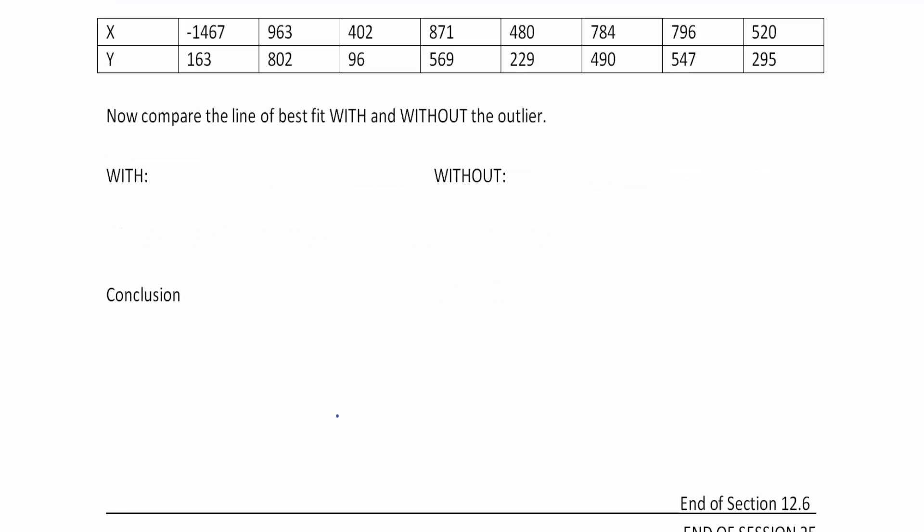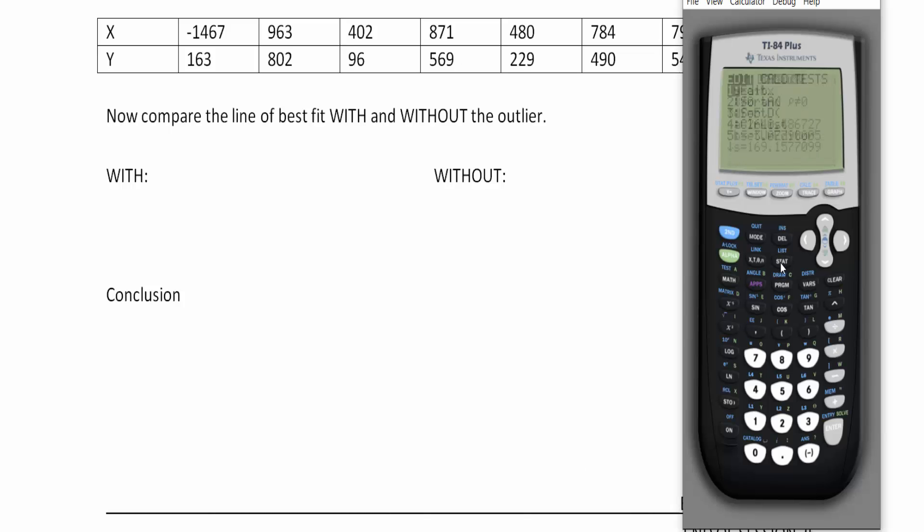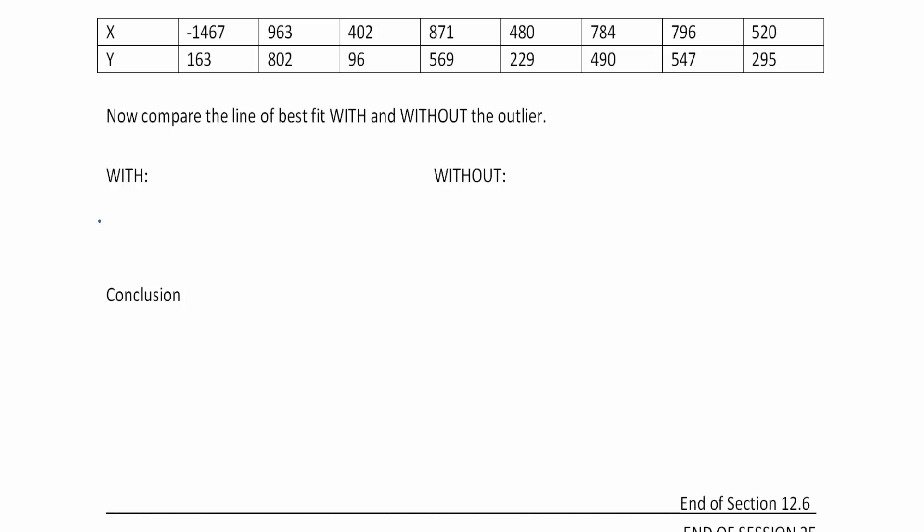This last example here is going to be entering this data. Now I just so happen to have it on my calculator as well. I happen to have loaded it into list 5 and list 6. So I'm going to go second 5. So there's my x values. And go up here for second 6. And here are my y values. So if I hit zoom 9, I should be able to see that data. And look at that outlier right there. If I hit trace, I see that as negative 1467 and 163. The first data point happens to be the outlier. So I'm going to quit out of this and circle my outlier. So here's the outlier right there.